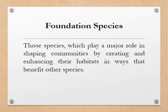Foundation species are those which play a major role in shaping communities by creating and enhancing their habitats in ways that benefit other species. Foundation species is a dominant primary producer in an ecosystem, both in terms of abundance and influence. For example, kelp in kelp forests and corals in coral reefs — the role of kelp I have talked about in detail in my previous lecture.